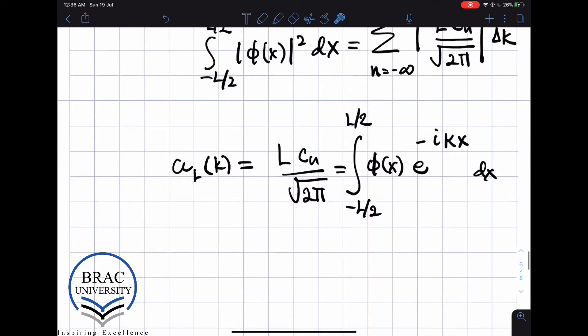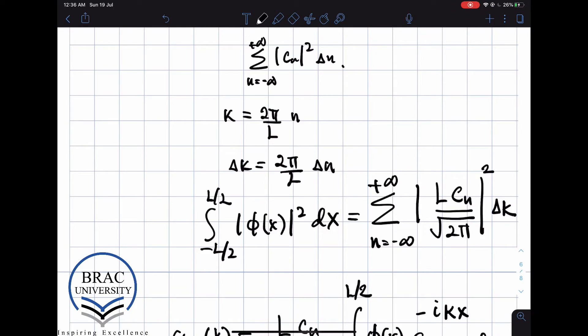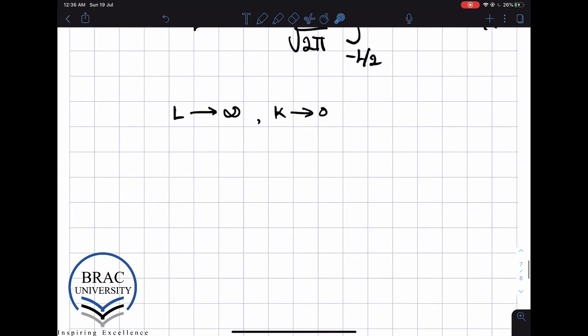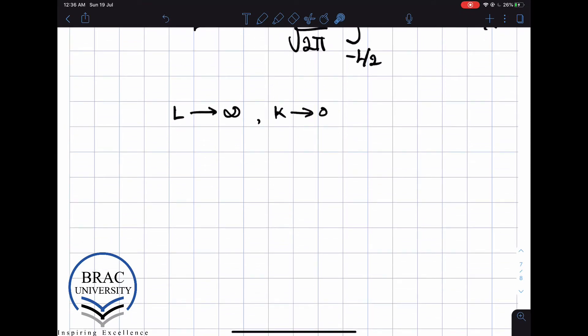And now what we do is that we take the limit in which L goes to infinity and k goes to 0. So if I take L to infinity, then of course k goes to 0.